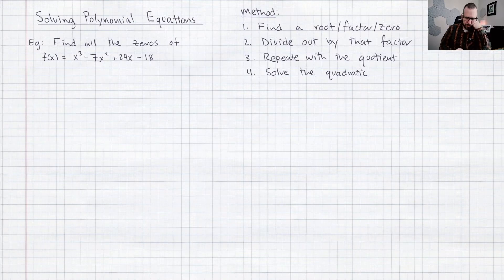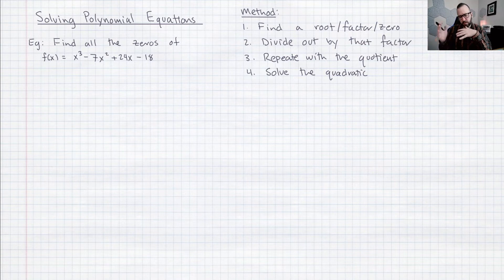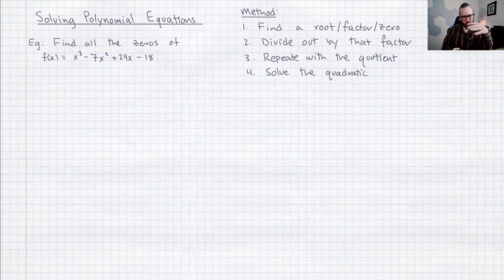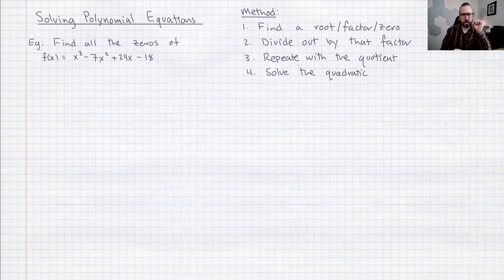I'm going to solve a polynomial equation. The method is you're going to use the calculator, either the graph or the table to find one of the zeros and then that is also giving you a factor. So the next step is to divide out by that factor and now get a smaller polynomial and then you just keep doing that process until you get it down to a quadratic and then once it's a quadratic you just use your regular quadratic equation solving techniques to get the answer.